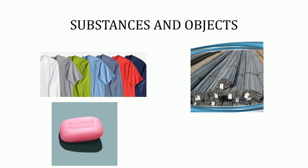Iron is used for construction purposes — girders, parts of automobiles, electric poles, tables, and cupboards are all made from iron. When you study the properties of substances, you can select the substance suitable for your purpose.